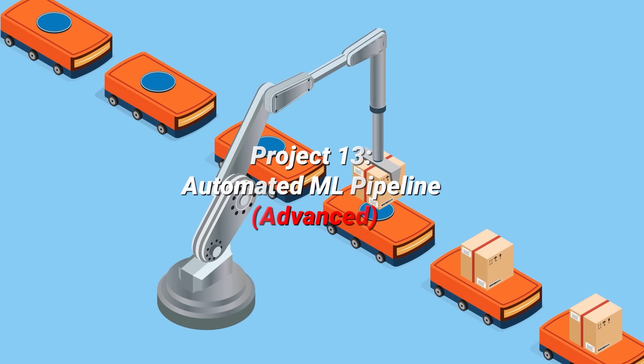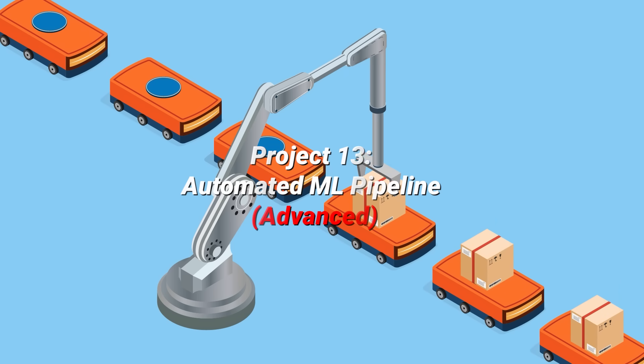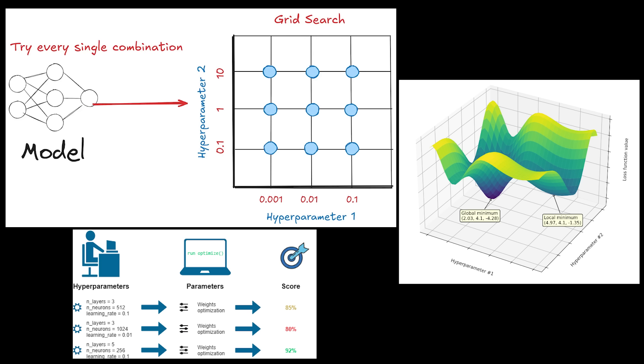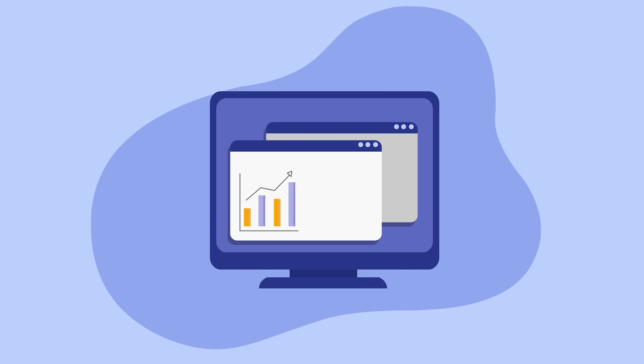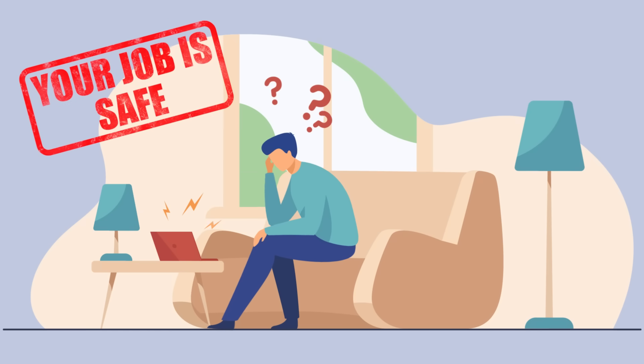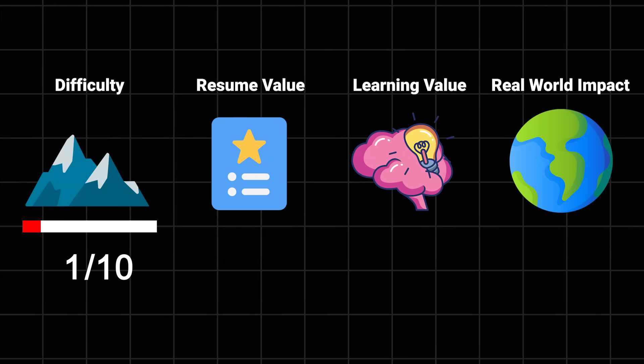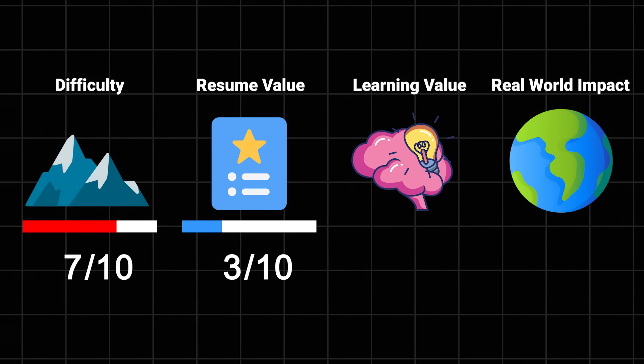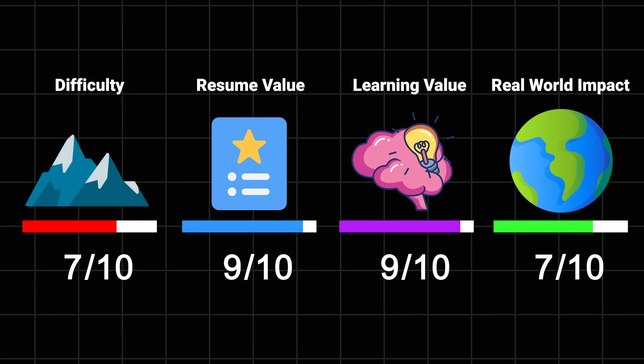Automated ML pipeline. This is where we enter the realm of ML engineering. You'll build a system that can automatically select features, choose models, and tune hyperparameters. It's like teaching a computer to do data science - a real taste of ML engineering. Warning: you might feel like you're automating yourself out of a job, but don't worry, someone needs to build these systems. Difficulty: 7 out of 10. Resume value: 9 out of 10. Learning value: 9 out of 10. And impact: 9 out of 10.